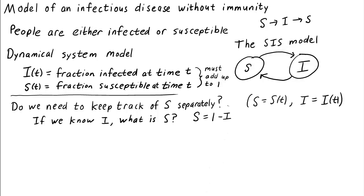So the answer is no, we do not need to keep track of S separately. We just need one state variable, and we can use i(t). If we know the fraction of people who are infected, we know the entire state of the system. We can infer from that the fraction of people who are susceptible.